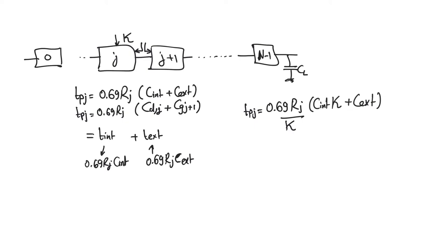The intrinsic capacitance increases by k because it is a drain capacitance of the current stage. The capacitance from the next stage is unaffected since we only resized the current stage. Therefore, T_internal remains constant because k cancels out — resistance decreases by the same factor that capacitance increases. However, T_external decreases by a factor of k. So if we want to minimize the delay of stage j and delay is all we care about, we should make it as large as possible.